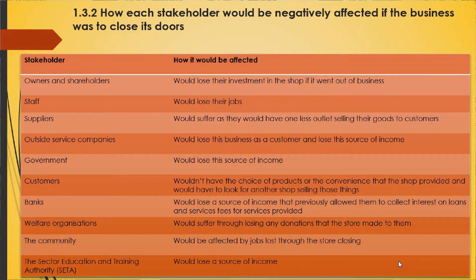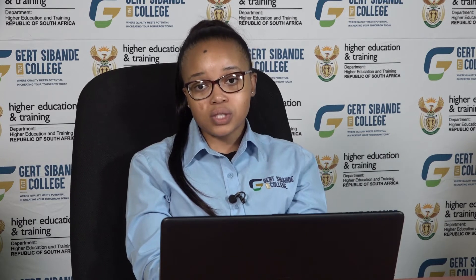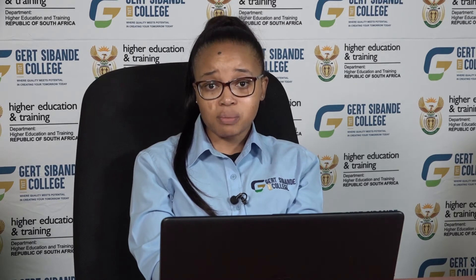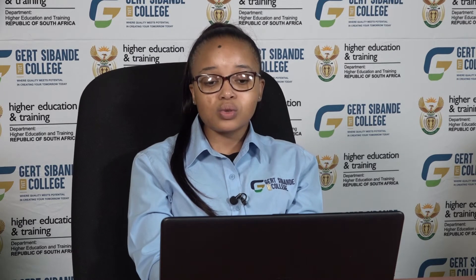Banks would lose a source of income that previously allowed them to collect interest on loans and service fees. Welfare organisations would suffer through losing donations that the store made to them. The community would see locally employed individuals lose their jobs. And lastly, the sector education and training authority would lose a source of income if a business closes its doors.